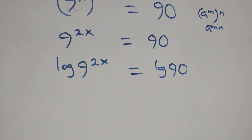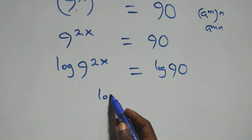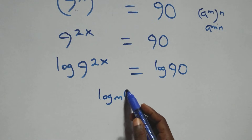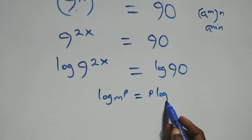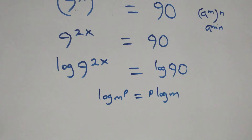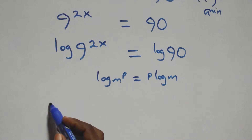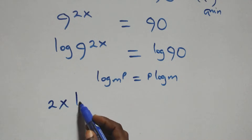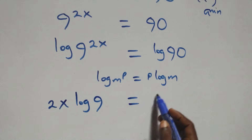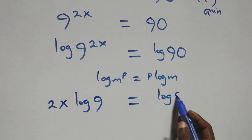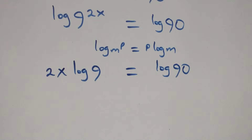At this step we apply the power rule of logarithms: log of m raised to power p is the same as p times log m. So this becomes 2x times log 9 equals to log 90.